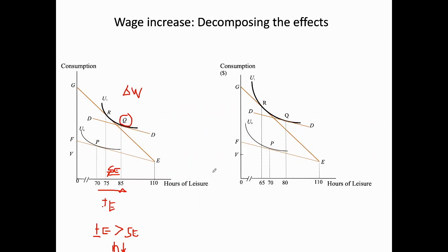Moving to the right side diagram: point P is the original tangential point where the worker originally spends 70 hours for leisure. Given the increase in the wage rate, point R is the new tangential point, showing the worker spends 65 hours for leisure. Again, we need to decompose the effect of the wage change into the income effect and the substitution effect.